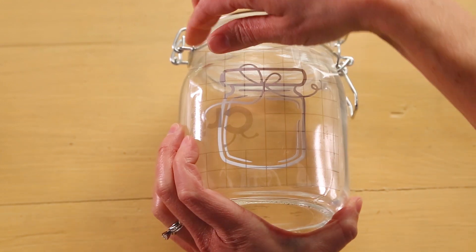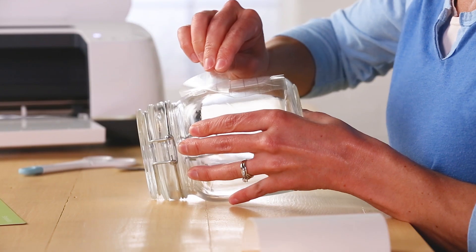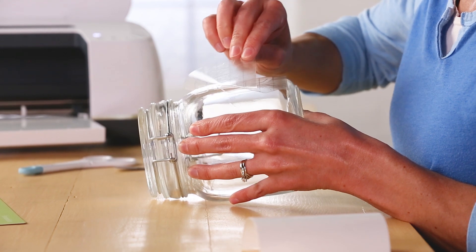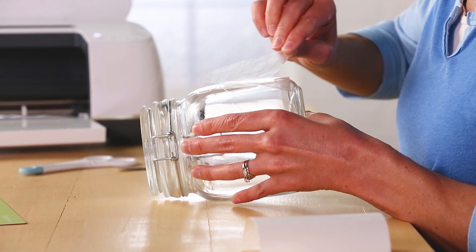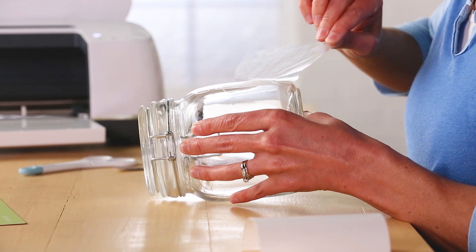When it's perfectly smooth, start at one corner and, using a rocking motion from side to side, slowly remove the transfer tape, pulling at an angle.